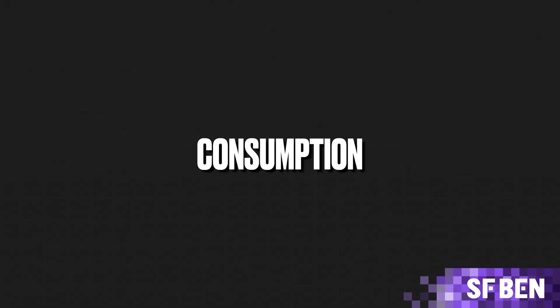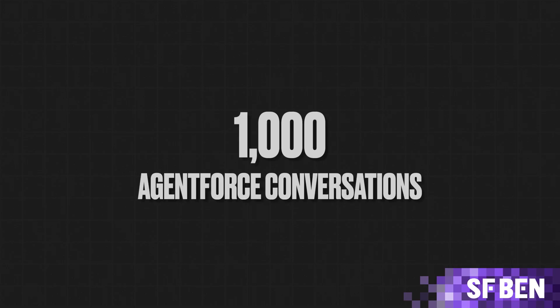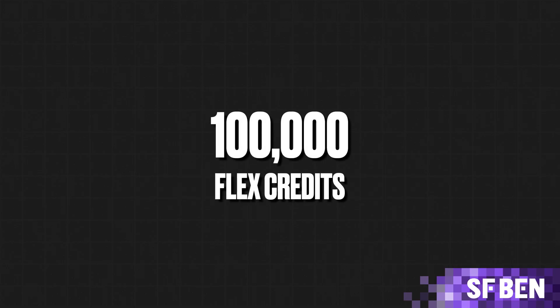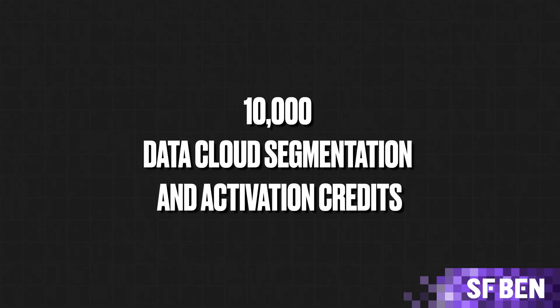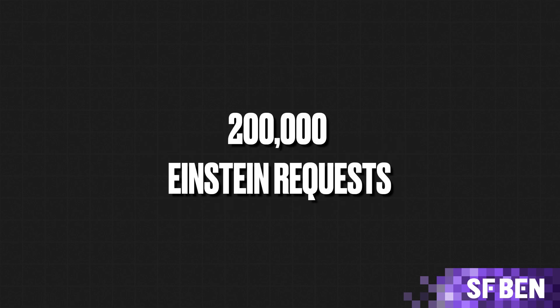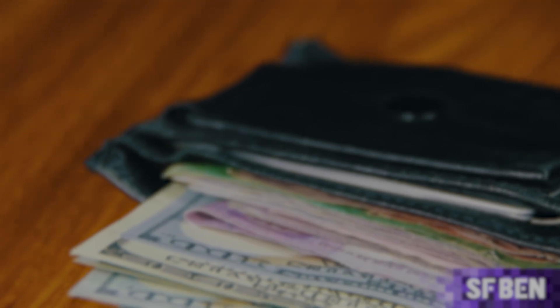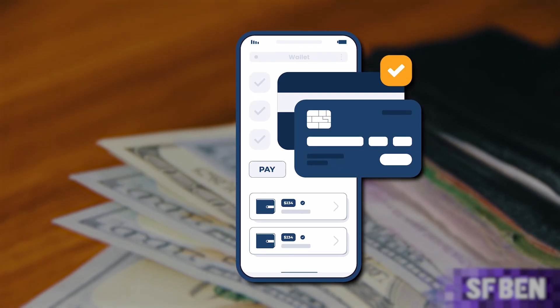Balancing innovation with cost control is a must in the age of consumption-based pricing, and this is why Salesforce has recently introduced flexible Agent Force pricing. For Salesforce Foundations, this translates to a shift from 1,000 Agent Force conversations to 100,000 flex credits, which customers can use for free to supercharge the processes of their choice. Both Data Cloud and Agent Force functionality consume credits when used, and Foundations grants enough credits to get started with simple yet scalable use cases. The offering also includes 10,000 Data Cloud segmentation and activation credits and 200,000 Einstein requests. Salesforce has you covered with a digital wallet and readily available consumption cards within the Your Account app, and consumption threshold alerts can be set to keep you up to speed with usage.